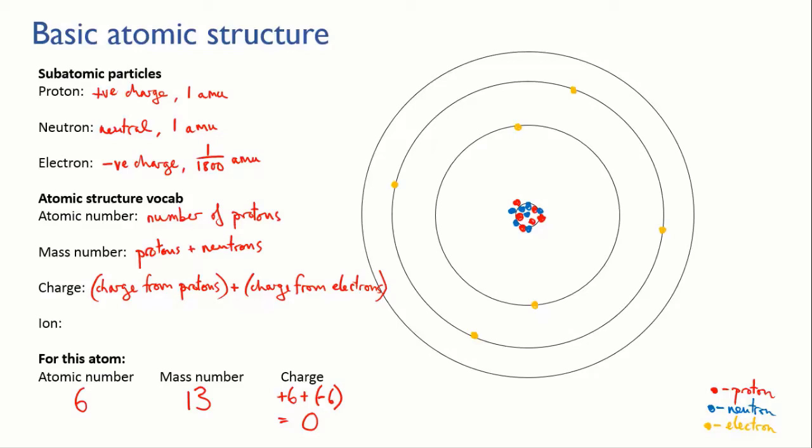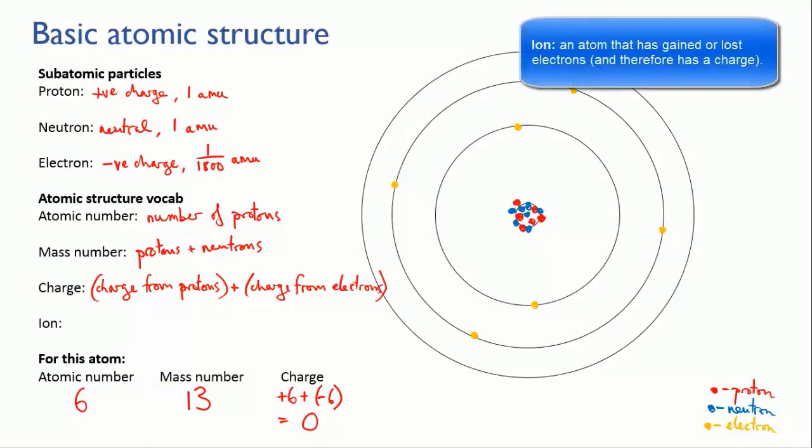If an atom does have a charge, whether it's positive or negative, we call it an ion. So only use the term atom if you're referring to a neutral atom, and use ion instead if the atom has a charge.